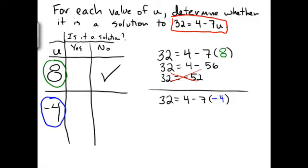Okay, so we'll follow the same kind of process here. Remember 32 equals 4 minus, now I have 7 times negative 4, which is negative 28. Remember again, I have to multiply it before I subtract.